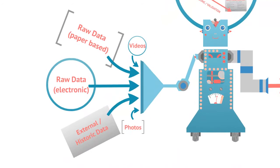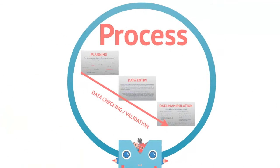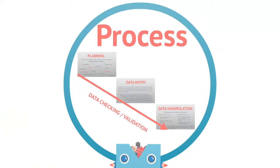There are several formats raw data can take. The most common are the results from paper-based and electronic data collection activities. This tends to be the new data which is collected as part of the activity. Other data from external sources such as climate data from a local weather station, or historical sources such as baseline survey data, can also be used to create primary data for an activity. Once the data has been collected or gathered from other sources, it can enter the transition process from raw to primary data.